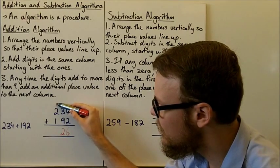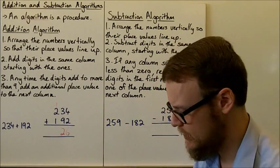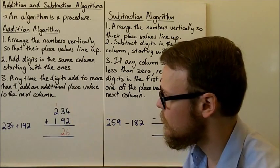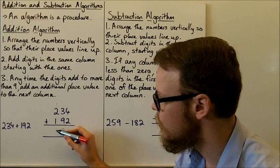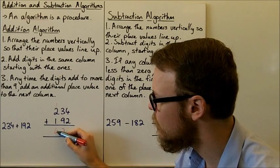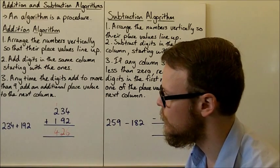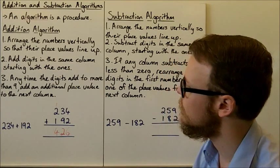So we add a 1 to the top of the place value here at the top of the next one. So we have 1 plus 2 is 3 plus 1 is 4. So our answer is 426 when we add 234 and 192.